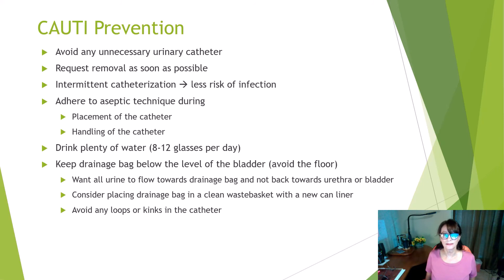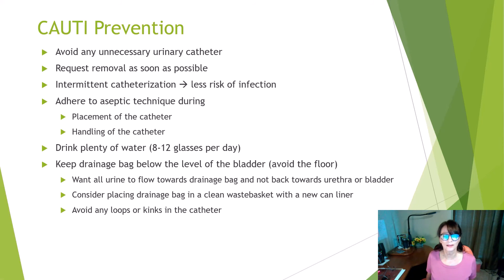The most important part is prevention. Avoid any unnecessary urinary catheter and request removal as soon as possible. Do intermittent catheterization if you're able — this results in less risk of infection compared to having a chronic catheter in place. Make sure you adhere to aseptic technique during placement and handling of any catheter. Drink plenty of water; studies have shown it can prevent and sometimes treat early urinary tract infections, so drink 8 to 12 glasses of water per day.